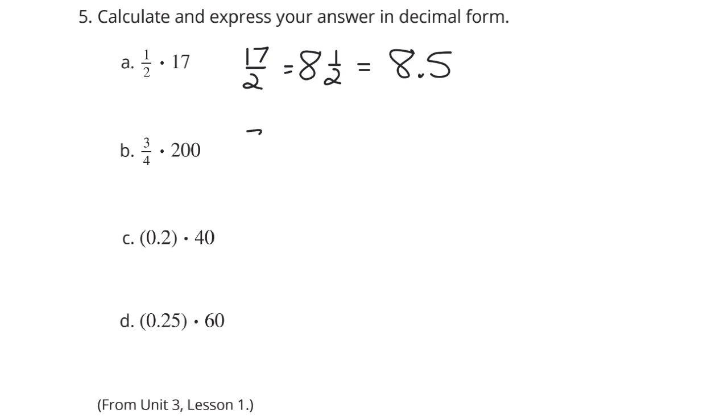Three fourths of 200. Well, three times 200 is 600 over four. If I take 600 and divide that by four, we get 150.